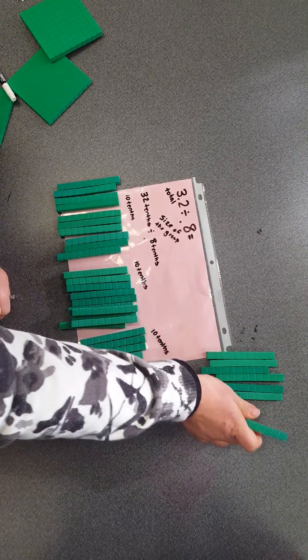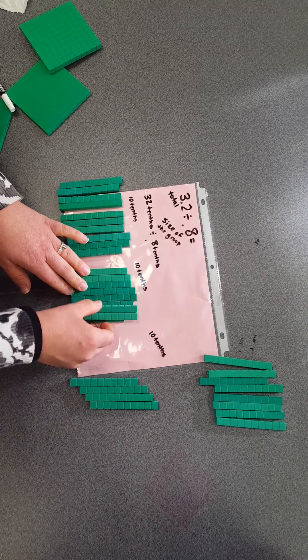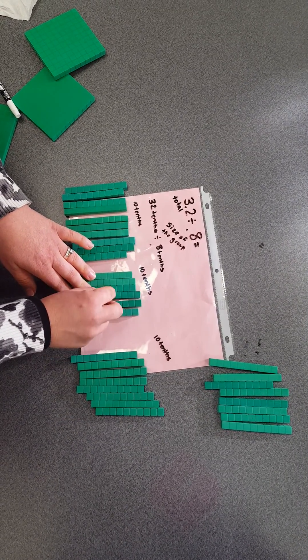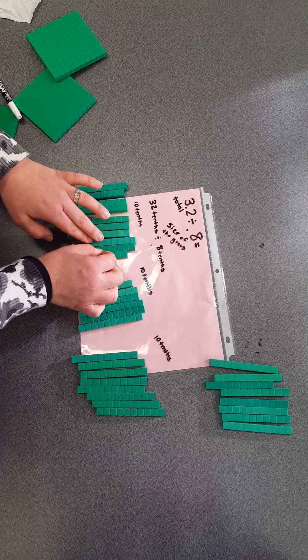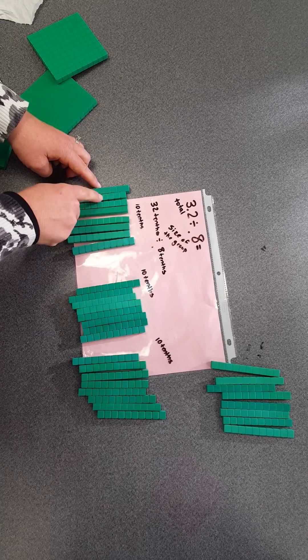Counting: 1, 2, 3, 4, 5, 6, 7, 8... 1, 2, 3, 4, 5, 6, 7, 8... dividing all 32 tenths into groups of 8.